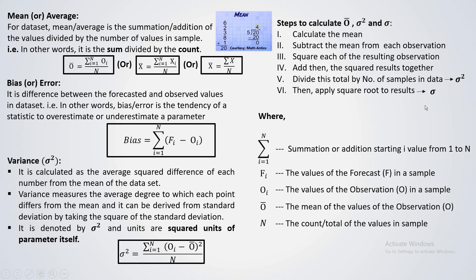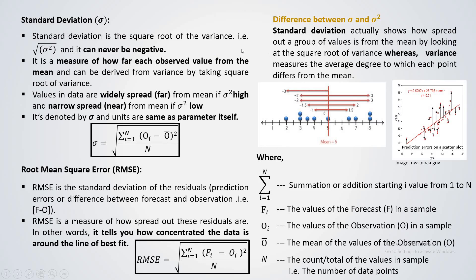Once you calculate the variance, applying the square root gives you the standard deviation. One important thing to remember: standard deviation can never be negative. What it measures is how far each observed value is from the mean. Looking at an example image — after calculating the standard deviation for a data set, you come to know how far each value is from the mean value of the data set. For instance, if the mean is 5, then a value of 2 is three units away from the mean.